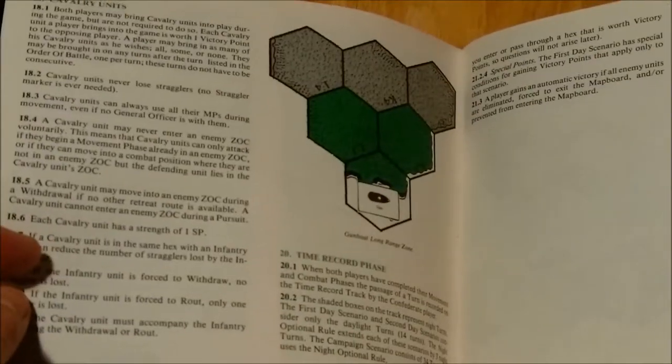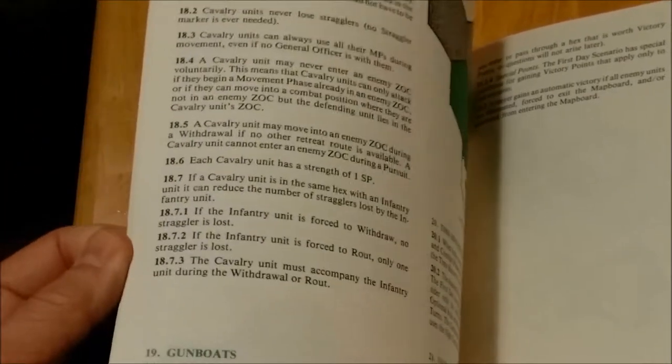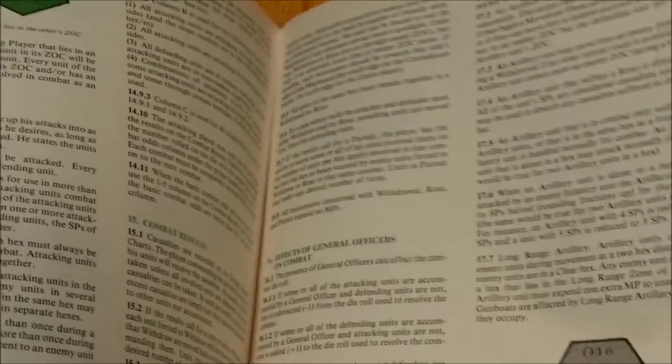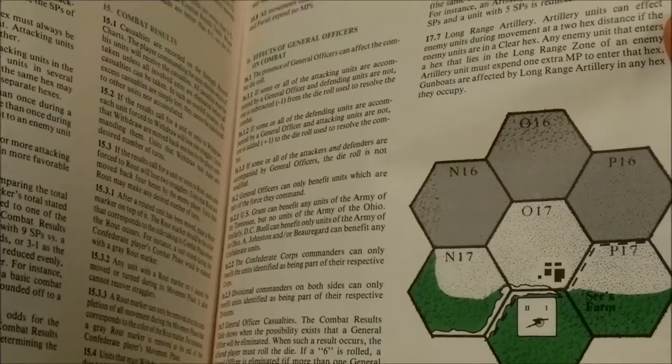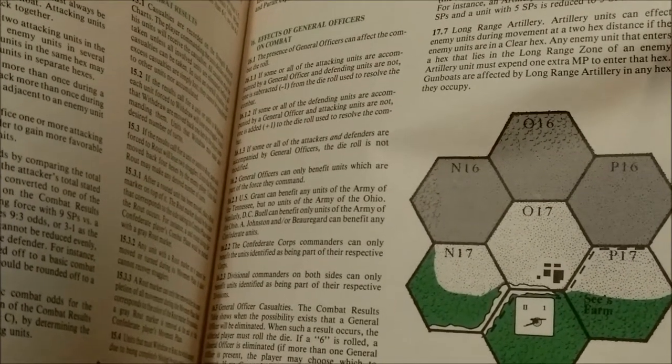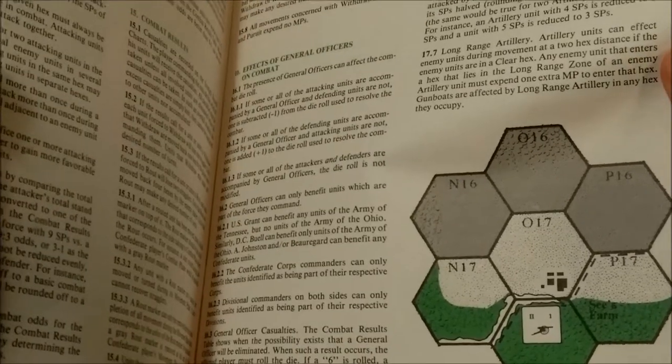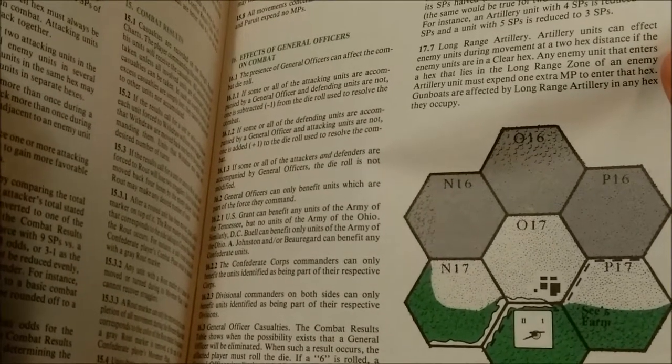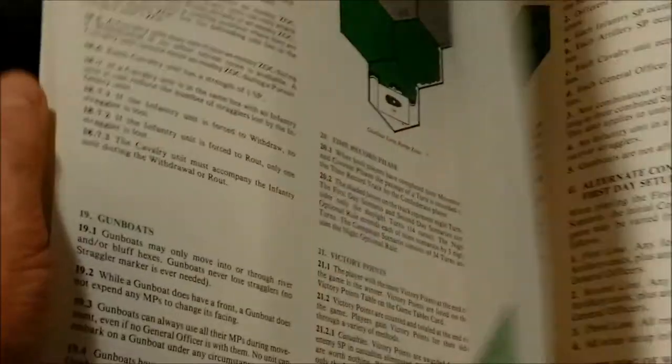Units can do what they call a long range fire. This is the gunboats long range fire. Artillery, similar. Basically, artillery normally attacks adjacent units. However, they can do a long range fire out to the shaded areas as long as they have a line of sight.